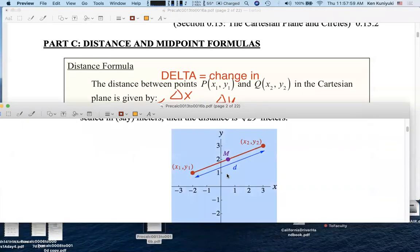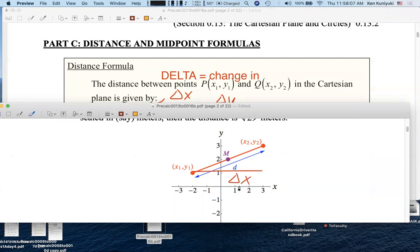In our picture, x₂ minus x₁ would be the non-negative quantity Δx, and y₂ minus y₁ would be this non-negative quantity Δy, because the second point is northeast of the first point.